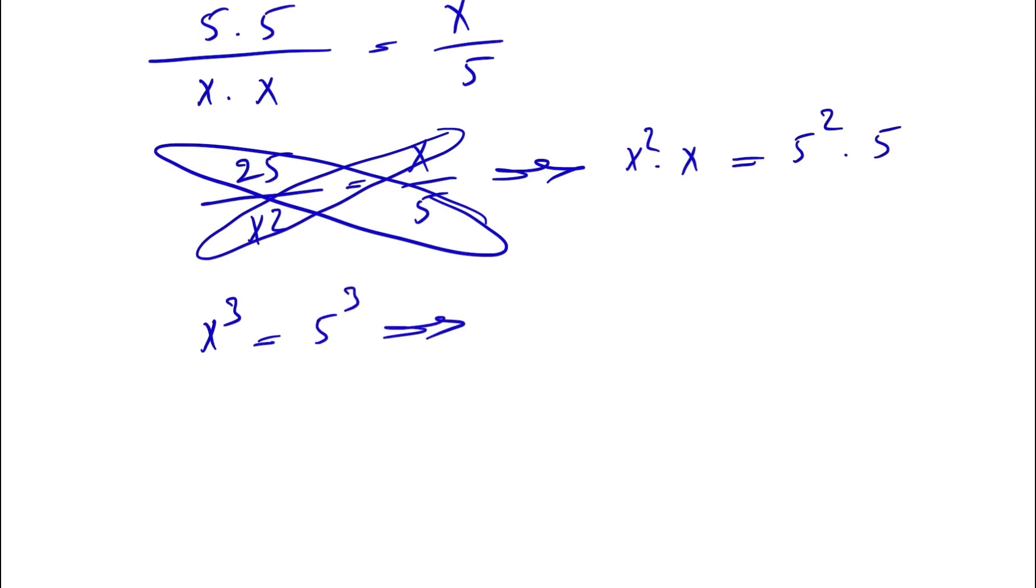So we're going to subtract 5 cubed on each side. So we have x cubed minus 5 cubed is equal to 0.